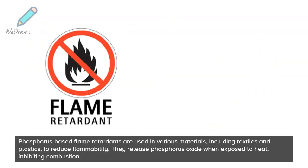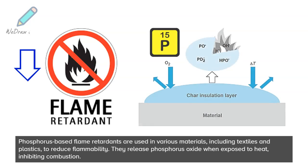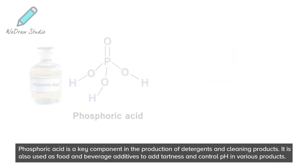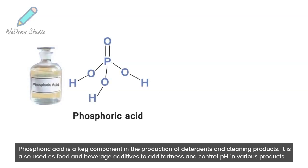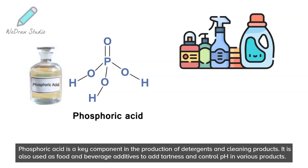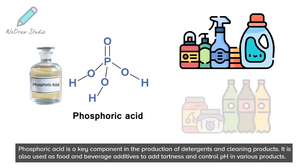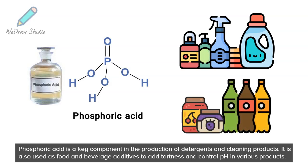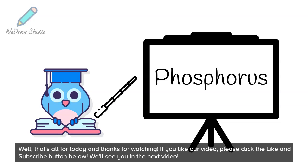Phosphorus-based flame retardants are used in various materials, including textiles and plastics, to reduce flammability. They release phosphorous oxide when exposed to heat, inhibiting combustion. Phosphoric acid is a key component in the production of detergents and cleaning products. It is also used as a food and beverage additive to add tartness and control pH in various products.